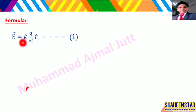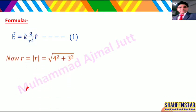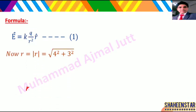k aapke paas constant hai, iski value 9 × 10⁹ hai. Aur aapke paas q ki value bhi given hai, r ki value bhi given hai. To is mein hum value substitute kar sakte hain, lekin us se pehle hum ne r unit vector find karna hoga.